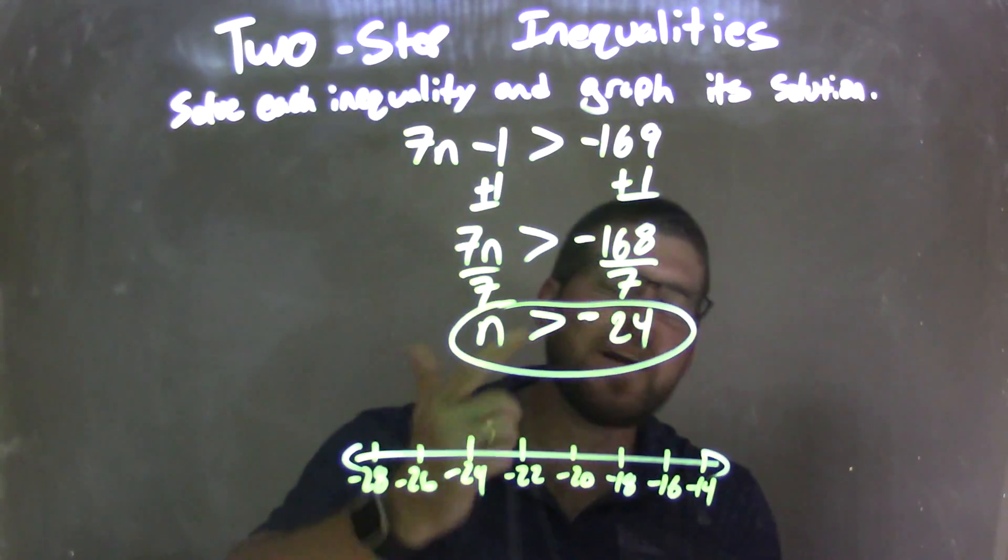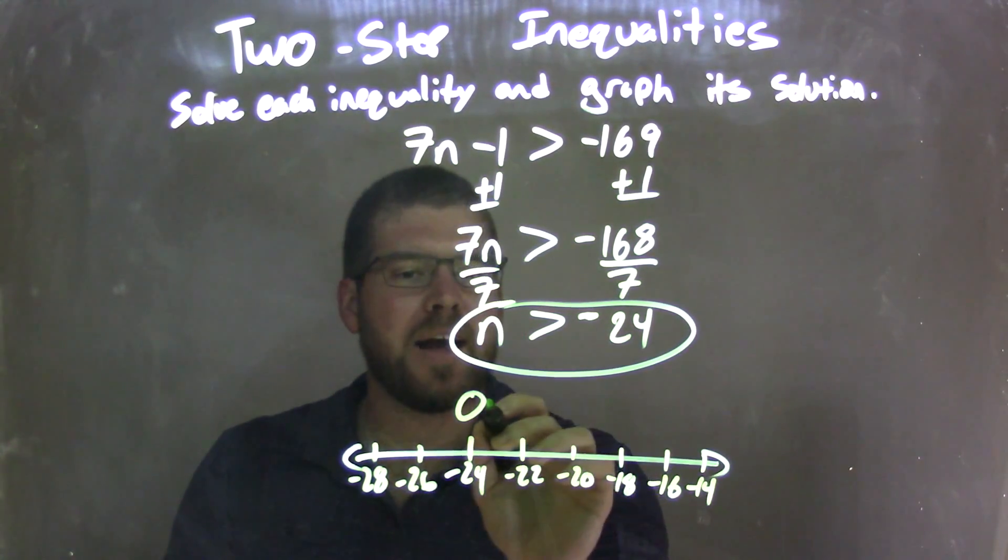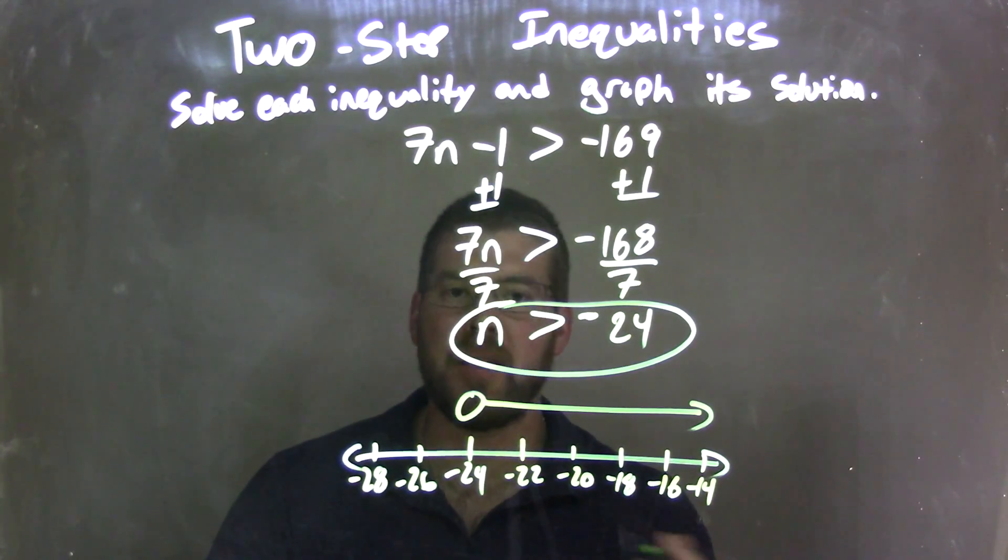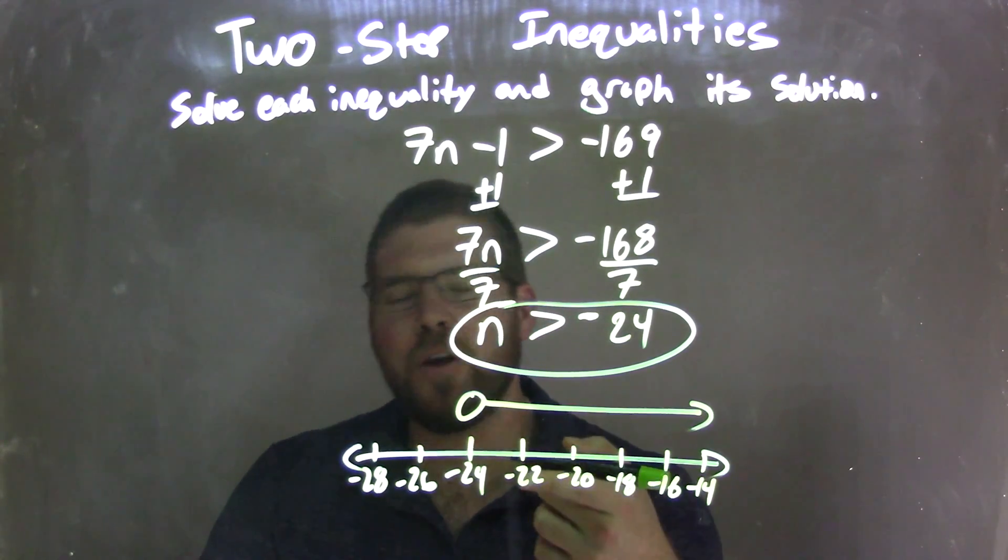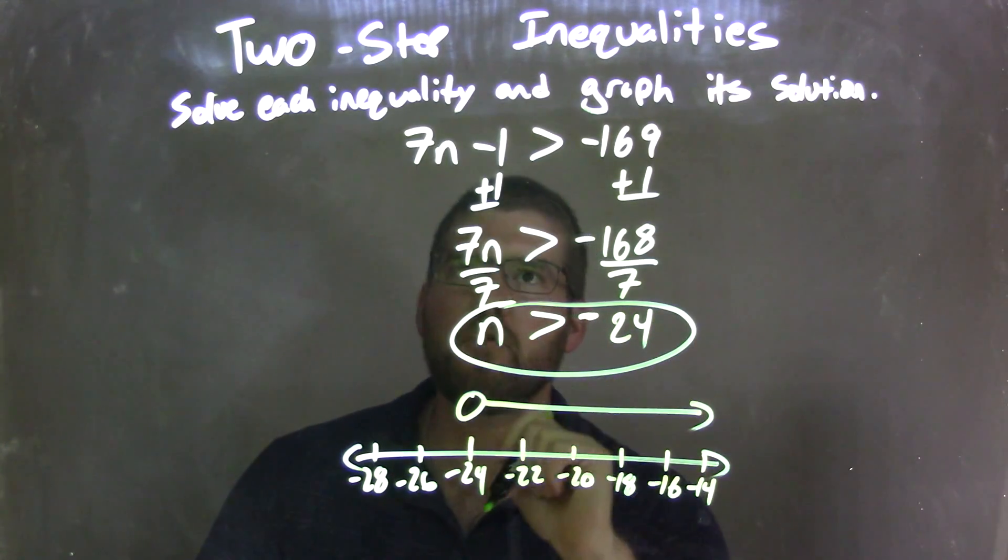Since n is greater than negative 24, we put an open circle right there at negative 24. It's greater than, so I need to put my arrow to the right. And there we have it. We have our graph here that matches our final answer of n is greater than negative 24. So let's recap.